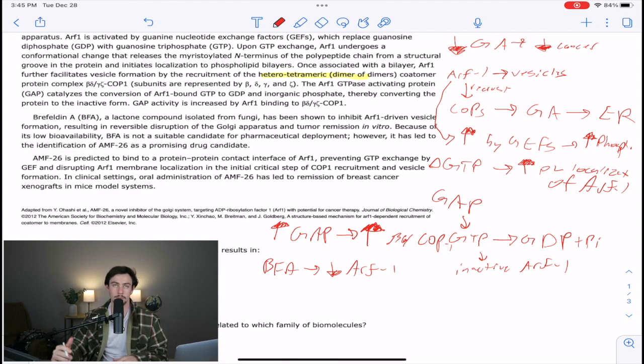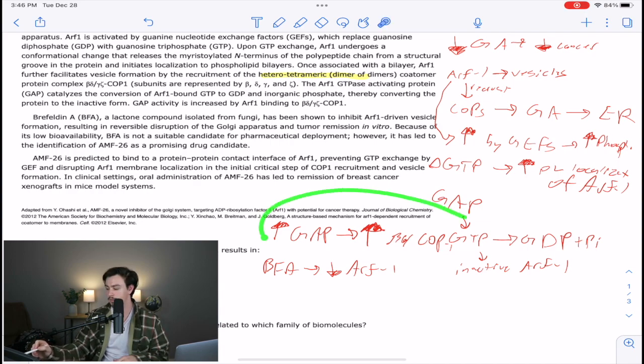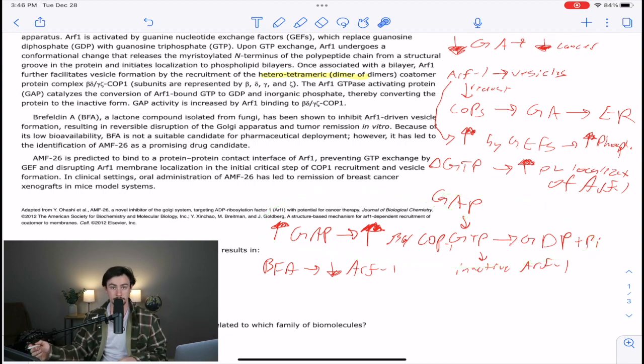So instead of having, if I get asked a question that's essentially what does BFA do and how is it working, I don't have to go through and reread all this stuff. I can just go back and look at my notes, and it says BFA leads to a decrease in ARF1, and then I can go back and be like, well, how does ARF1 work again? And I go up here, and I say, oh yeah, ARF1 works by being attached to a GTP.